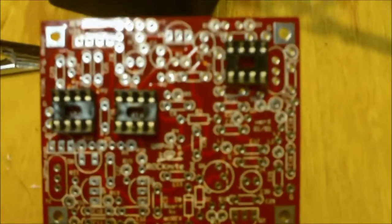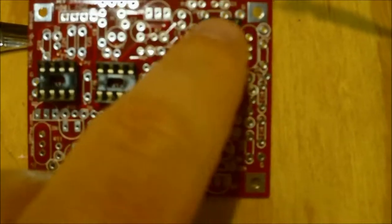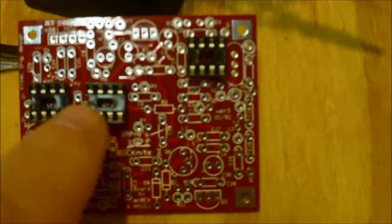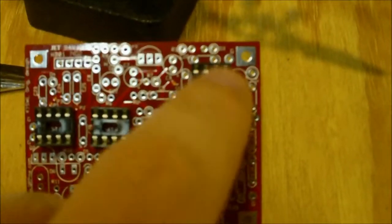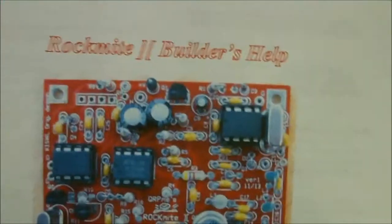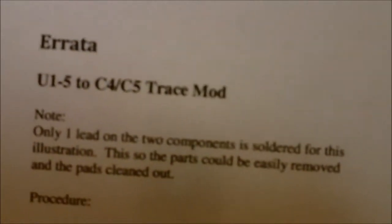This is the Rockmite 2. So on the Rockmite 1, this here was a surface mount chip. Now they have a special chip and it's a socket. There's a problem with it, and it's in the Rockmite 2 Builders Help Guide. It's the last thing, the errata, the U1 to U5 C4 C5 Trace Mod.